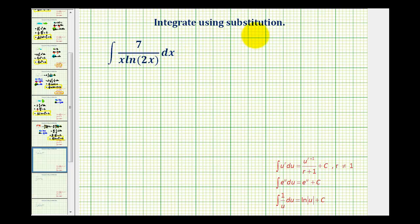We want to integrate using substitution or determine the anti-derivative using substitution. So it may be helpful if we rewrite this as seven times the integral of one all over x natural log two x dx.